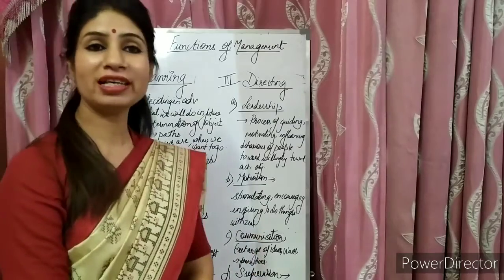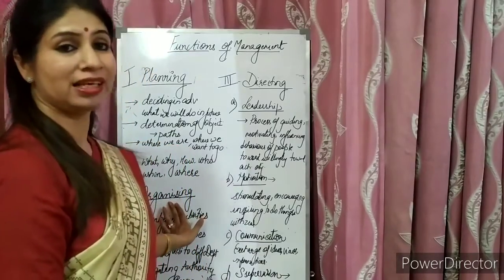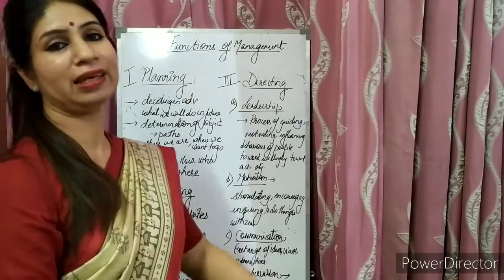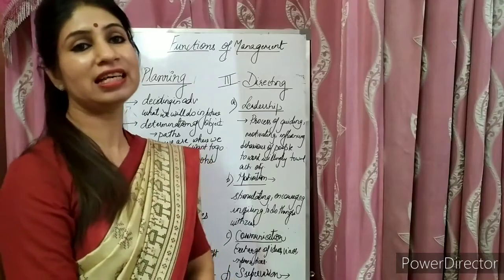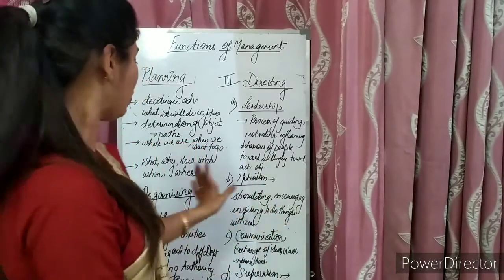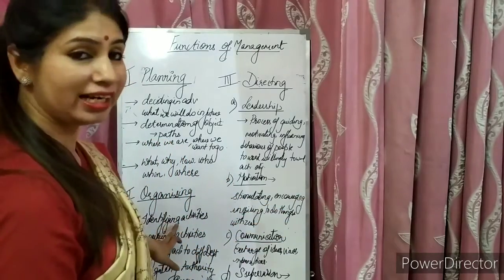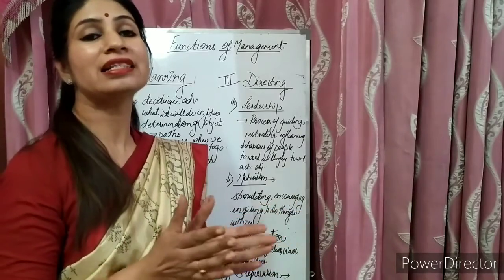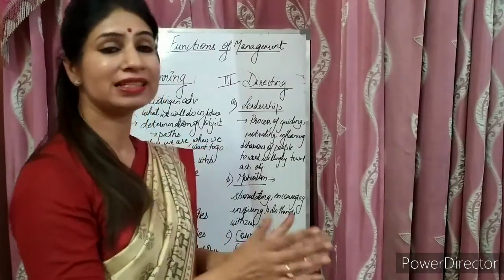After planning, the next function is organizing. After a manager has planned and decided various objectives, he organizes the resources and various activities so that the plans formed earlier can be implemented. The first activity is identification of activities, then grouping of similar activities together, and then assigning activities to different departments.